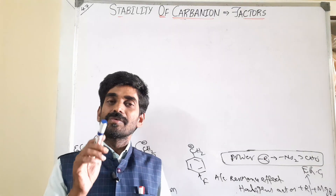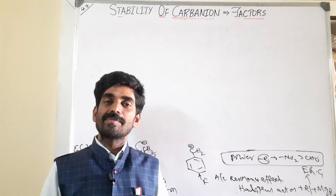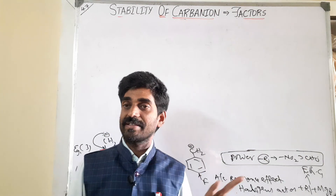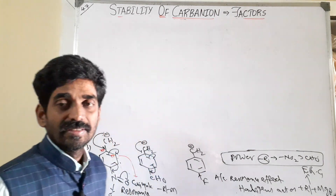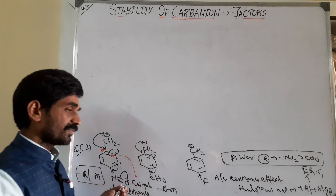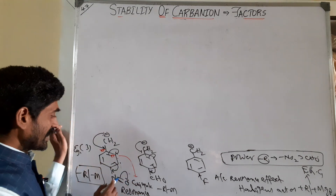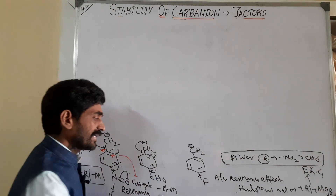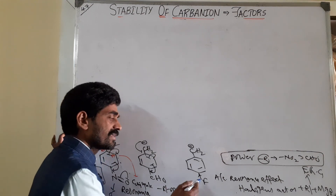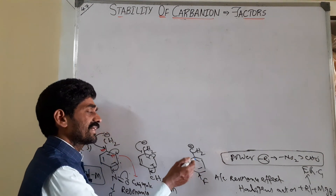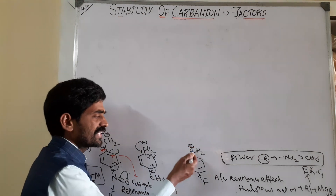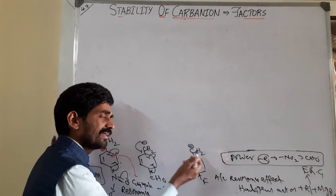Hi everyone. Now we are going to discuss about stability of carbanions, influenced by different factors. The last part we did, we cut off at the third example. So here there are NO2 groups, an OH group, and fluorine. According to the resonance effect, the OH group is a releasing group - it releases electrons. So the charge intensifies more over the carbanion, making it highly unstable.